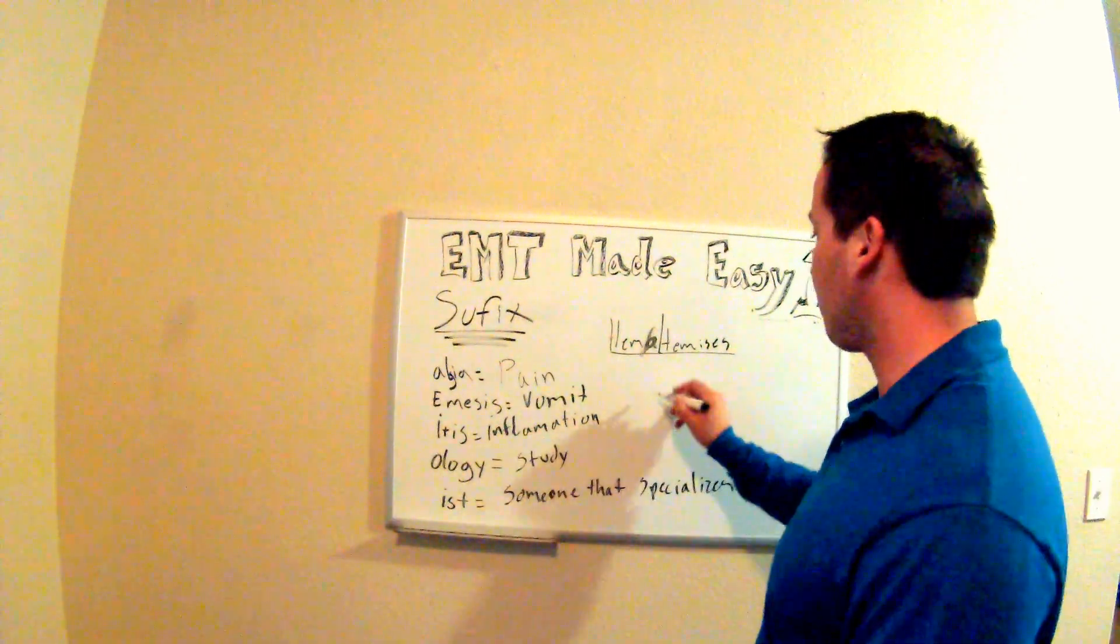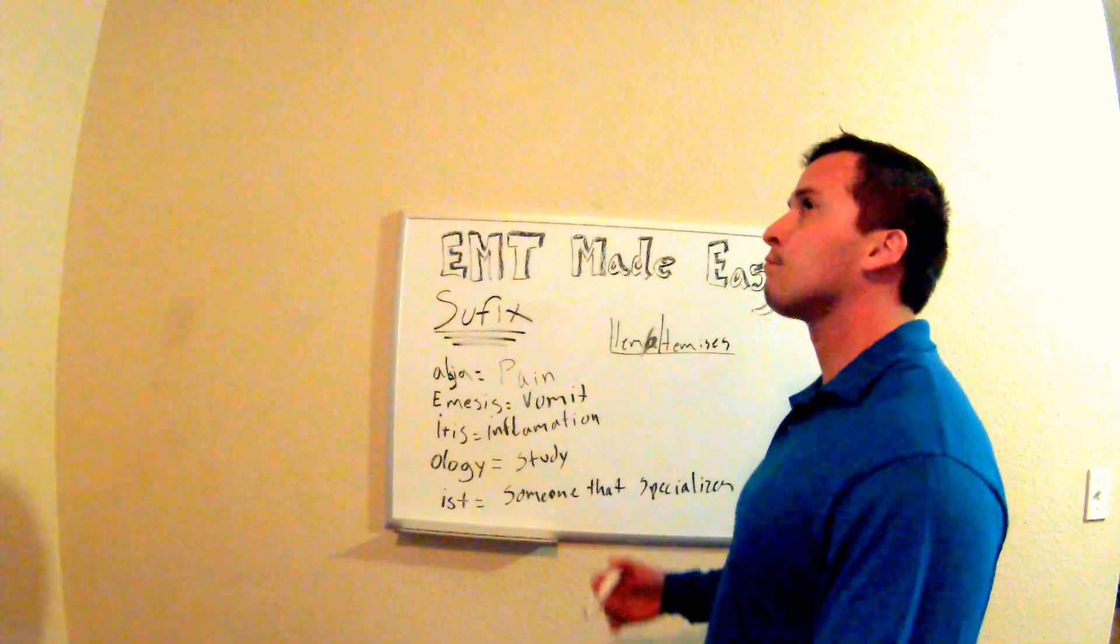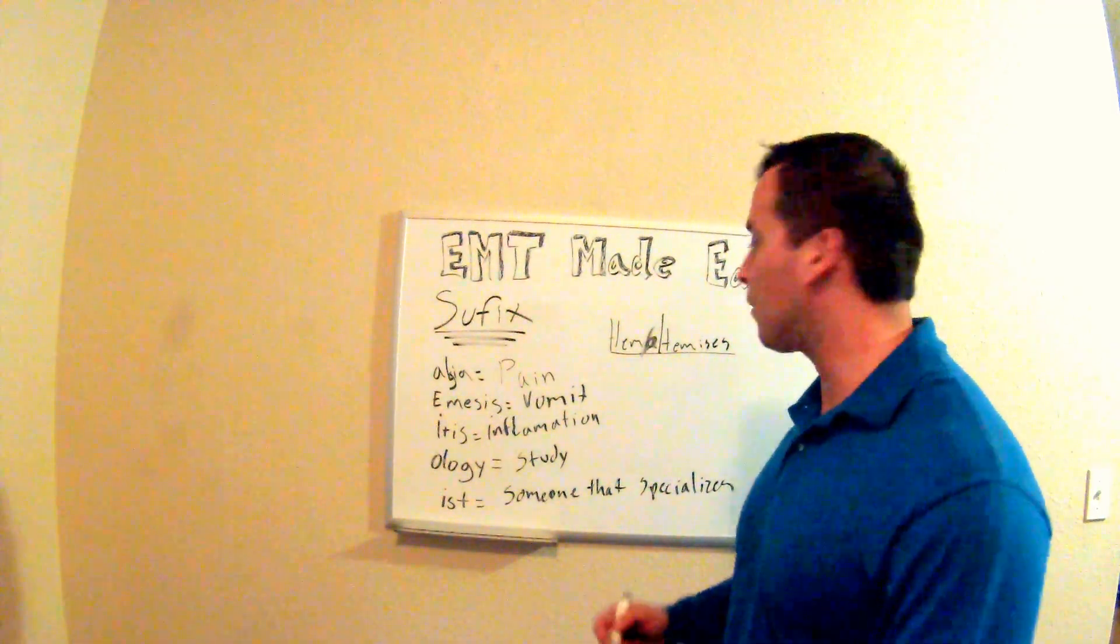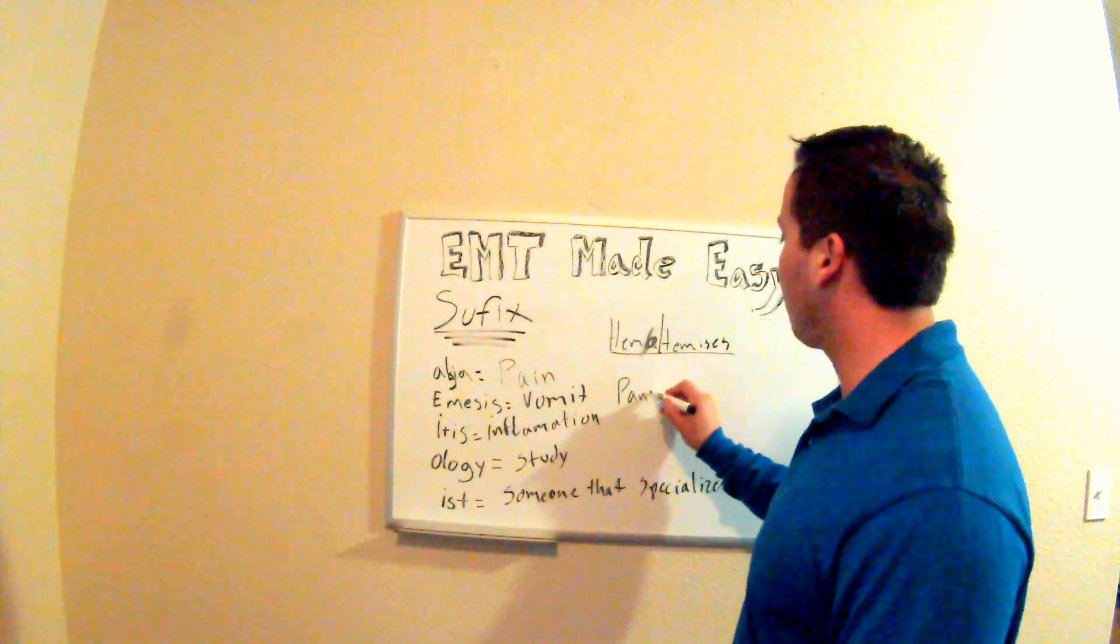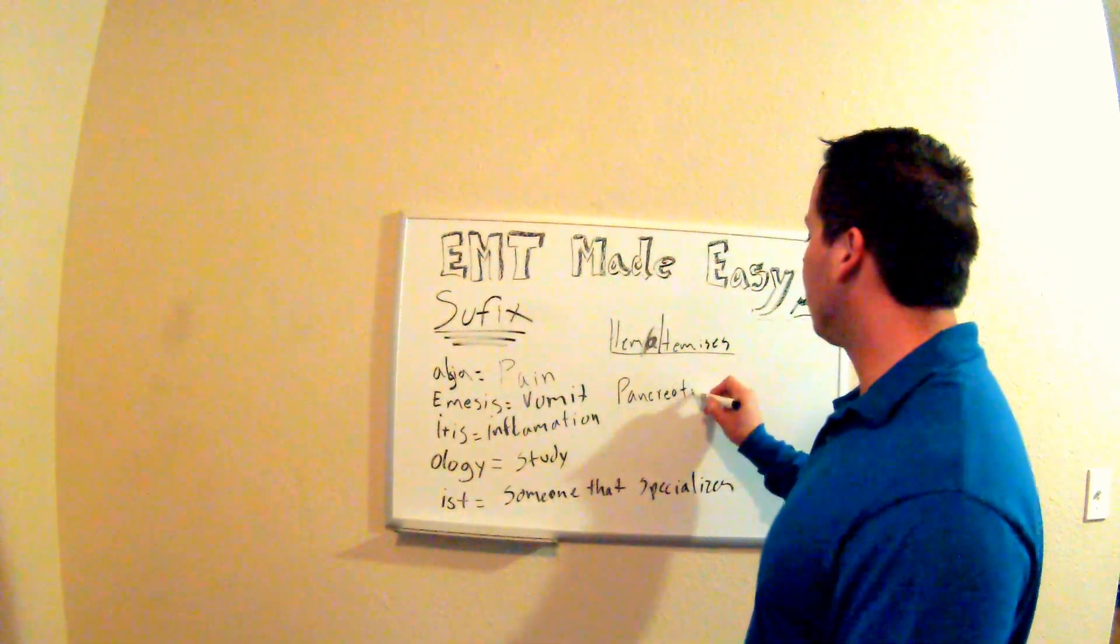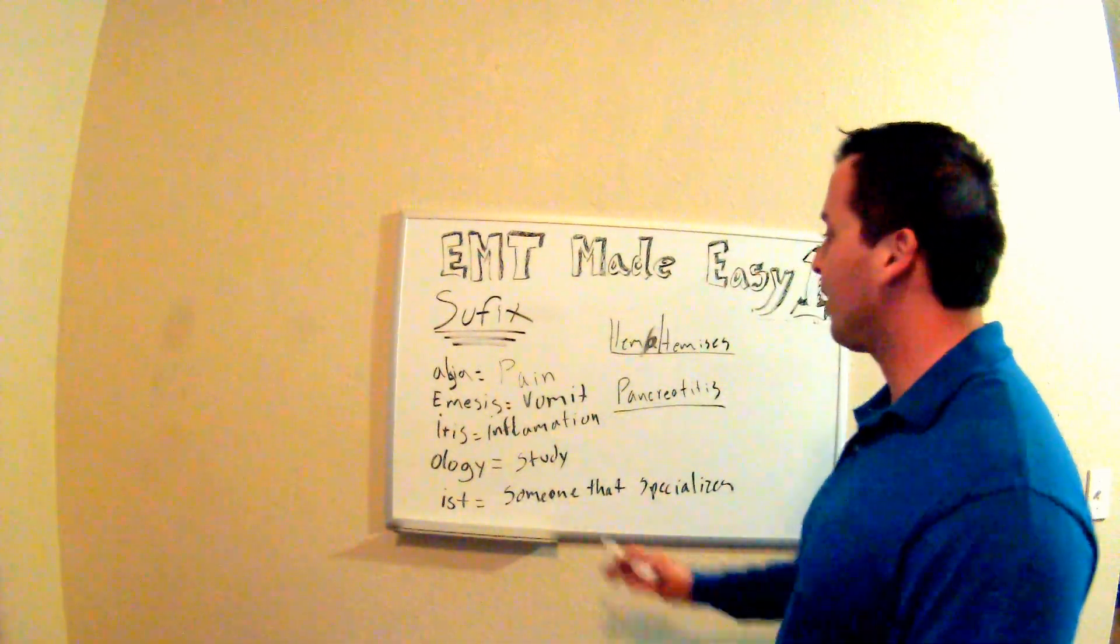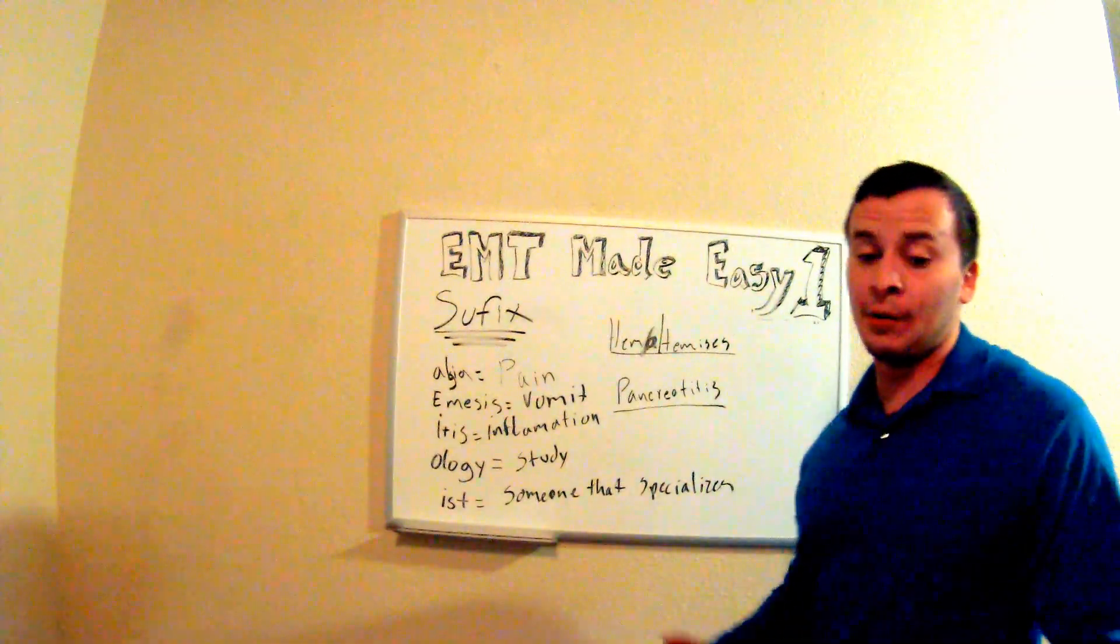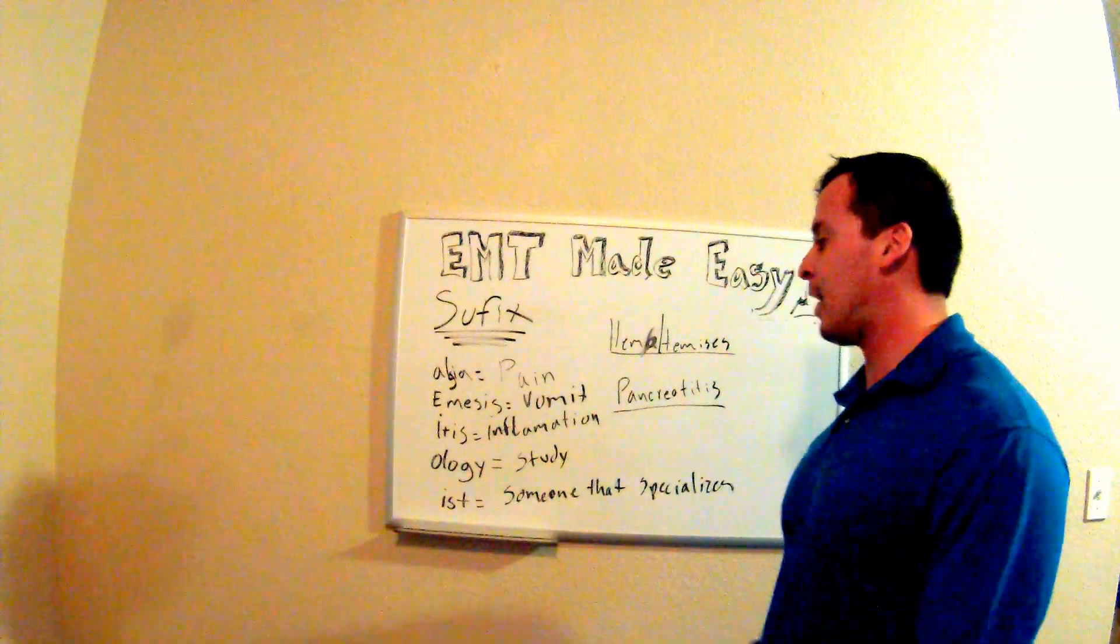Now itis. Let's pick an organ, how about pancreas? So pancreas, pancreatitis. What do you think that means? If itis is inflammation, it's an inflammation of the pancreas. The pancreas is inflamed, it's swollen, so inflammation means swollen too.